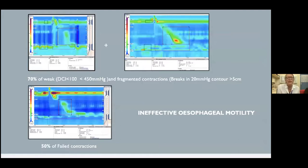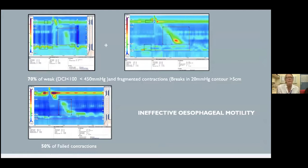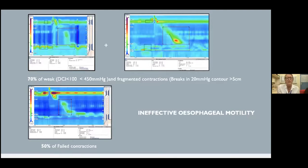Ineffective esophageal motility (IEM) is now more stringently defined in version four: 70% of the 10 swallows must be weak. Weak is defined as DCI between 100 and 450 mmHg·cm·s, or fragmented contractions with a gap of more than 5 cm between striated and smooth muscle segments. Alternatively, 50% of swallows being failed (5 out of 10) also qualifies. IEM is quite often found in conjunction with reflux disease.